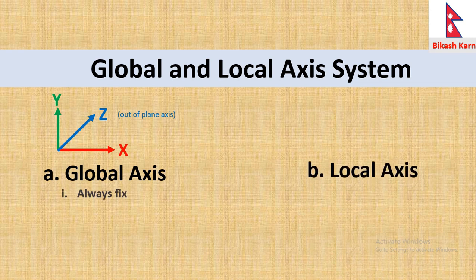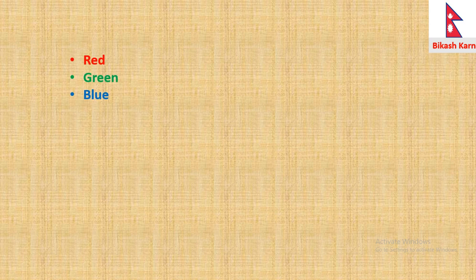The other axis system is local axis system. They change with orientation of member. In ETABS, three colors are used basically to differentiate them.